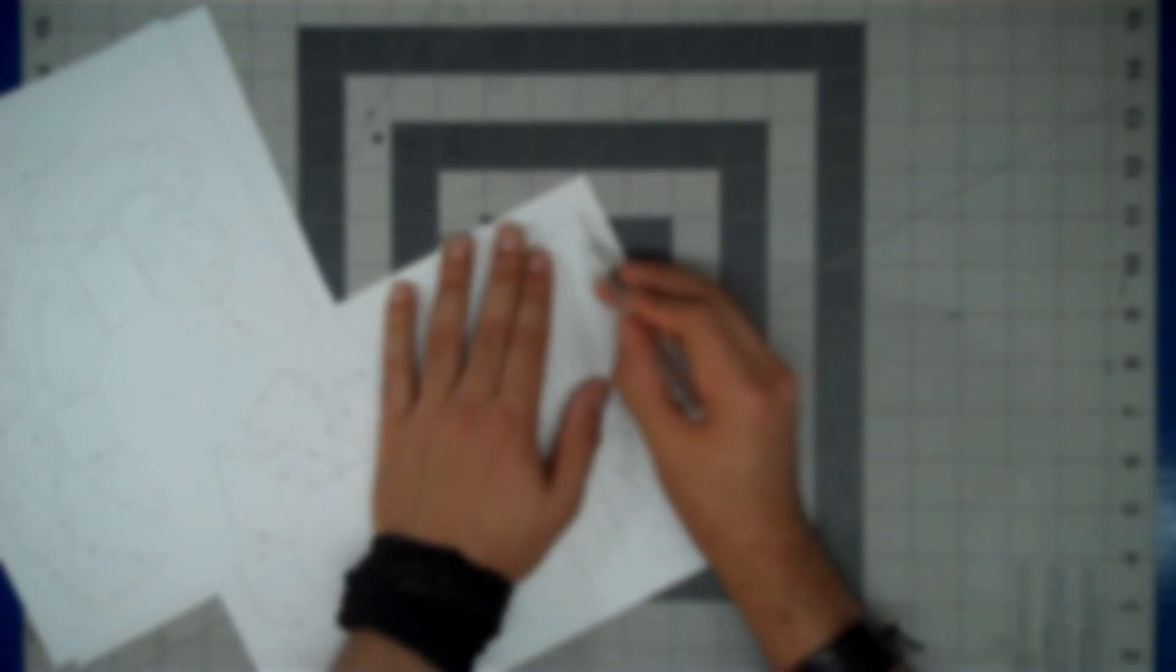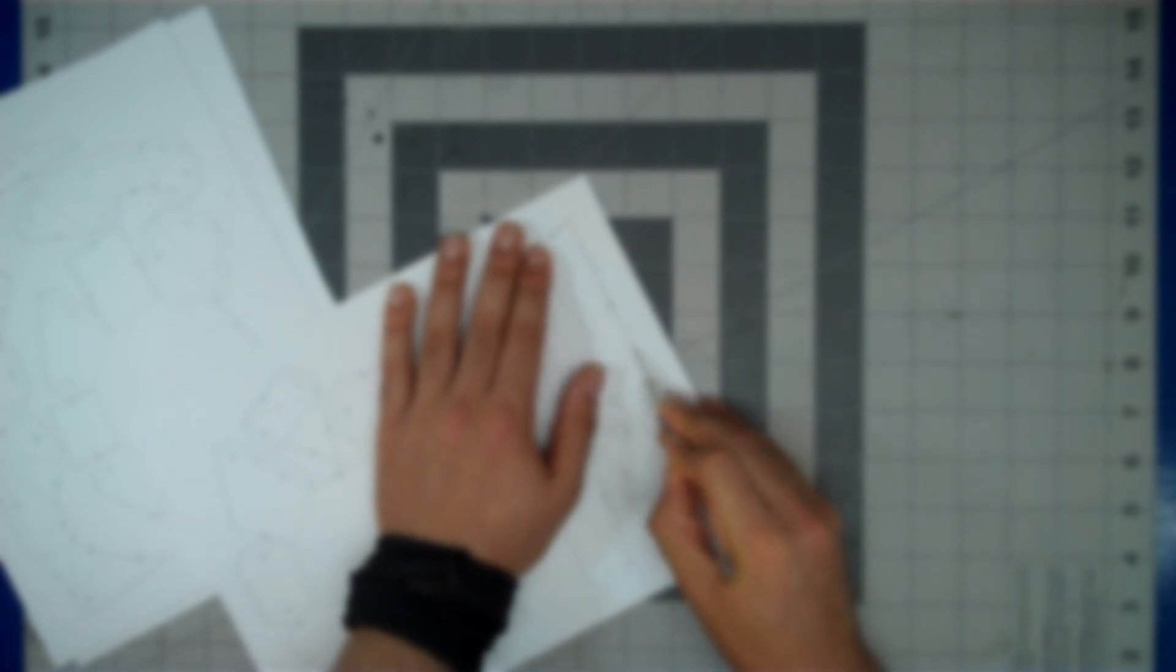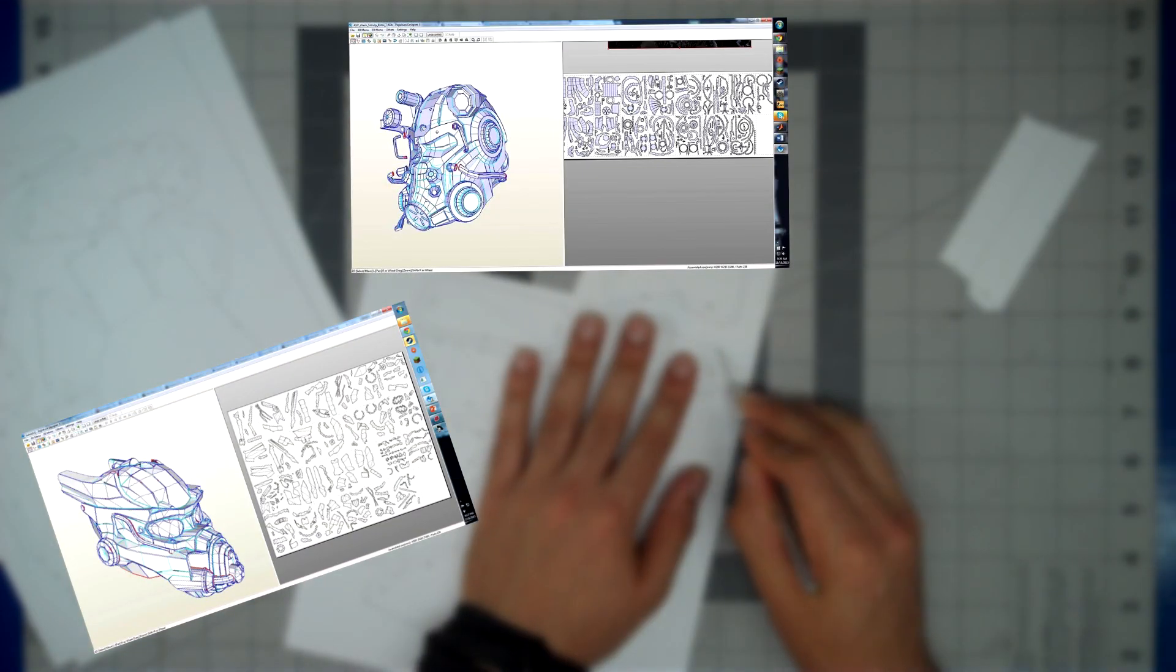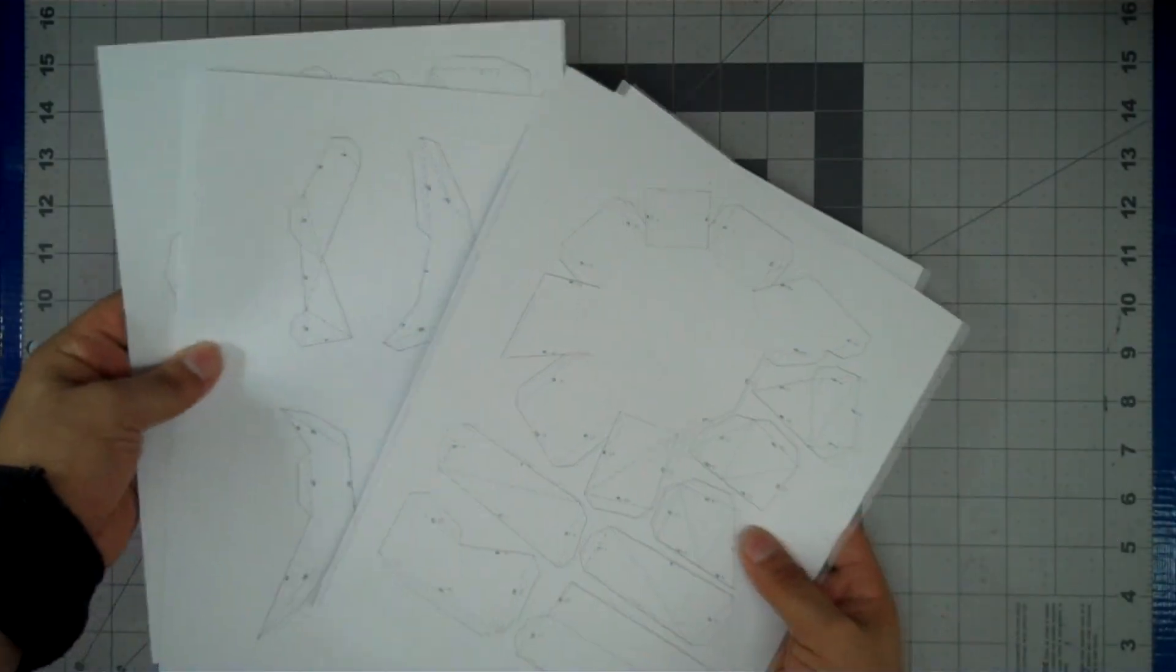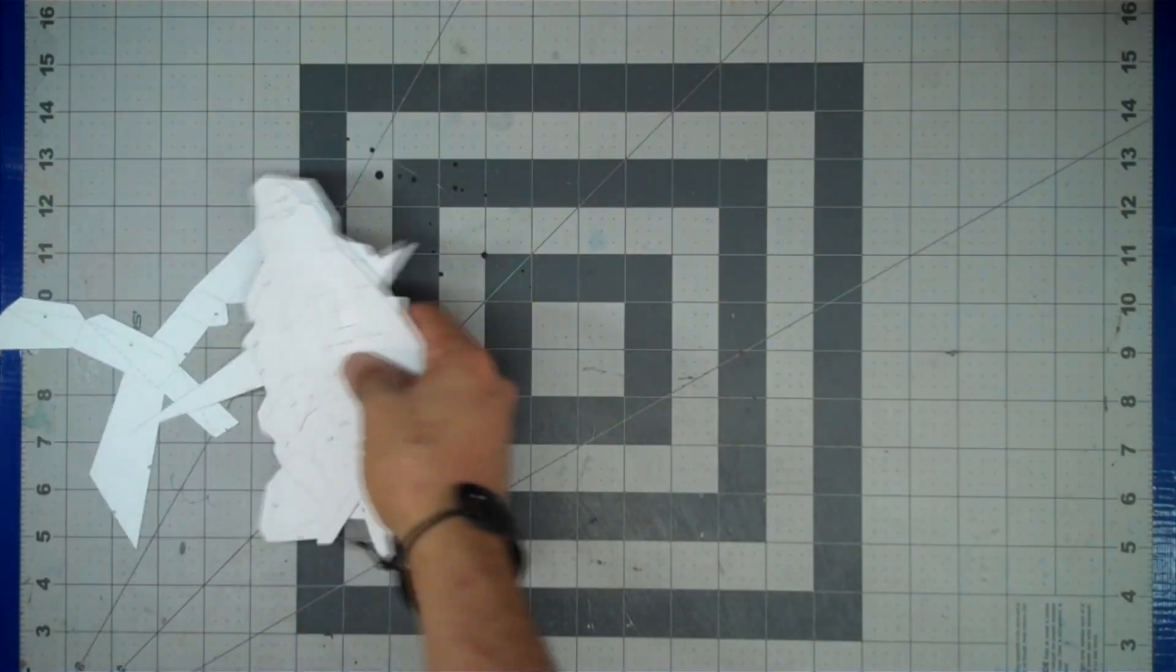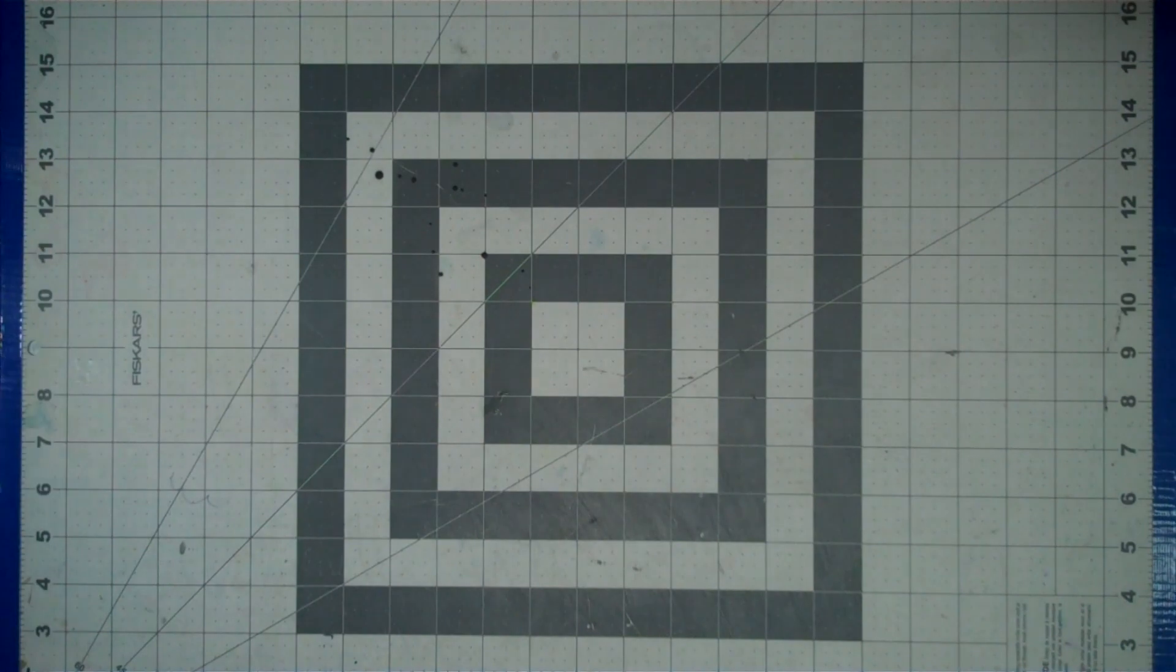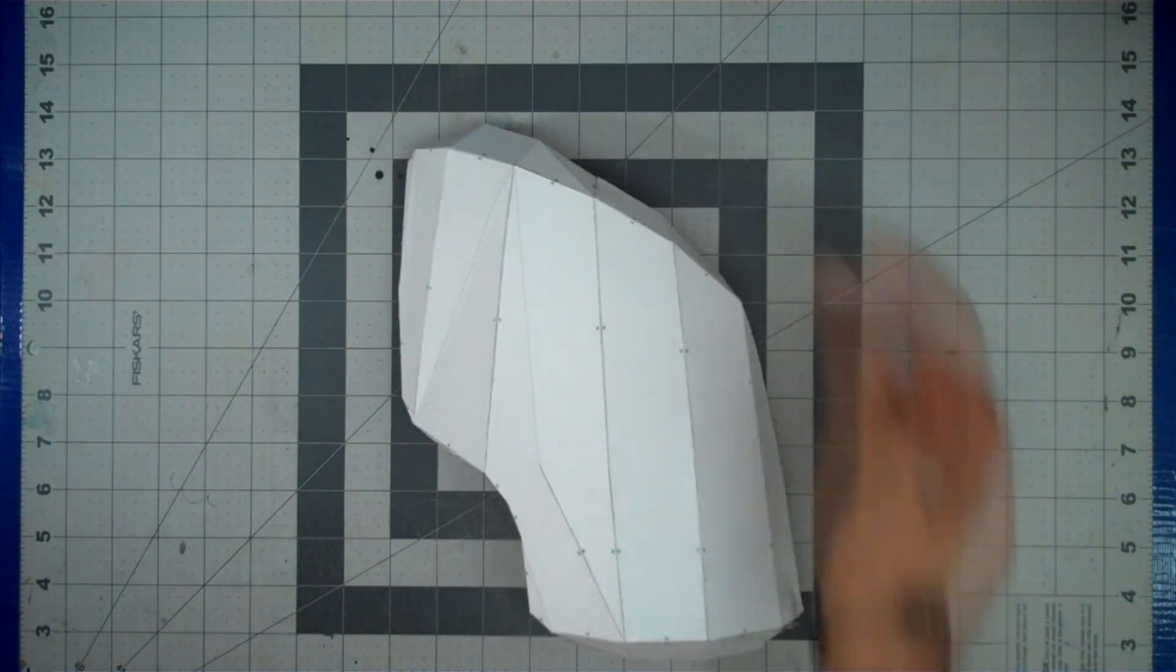For most cosplayers, the Pepakura process starts with downloading some Pep files, such as these, or these, or these. Printing these files out onto cardstock allows you to begin the cutting process, ending up with what are essentially a ton of puzzle pieces that, when assembled, will begin to take the shape of the intended model.